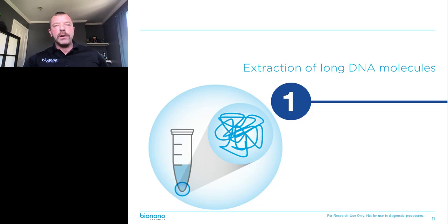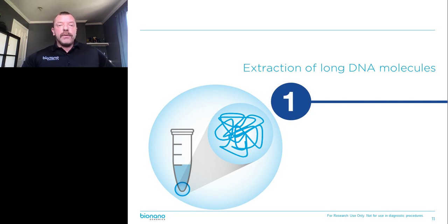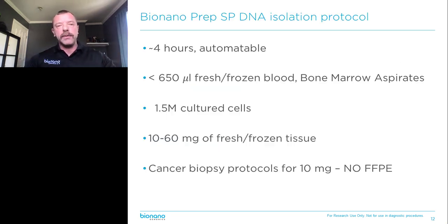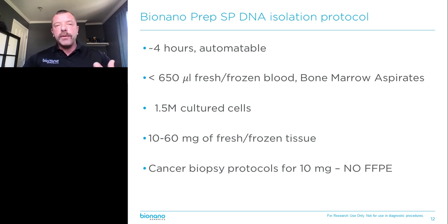Let me tell you how it all works. The first step in isolating megabase pair DNA is to get these molecules without shearing them out of cells. We have our own extraction kits called BioNano SP. They're very gentle and work with a paramagnetic disk that the DNA binds to. These DNA isolation protocols are fast — faster than a typical Qiagen kit — and require just 650 microliters of fresh or frozen blood.